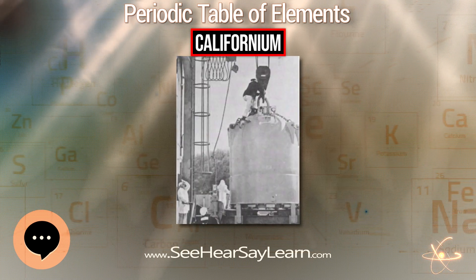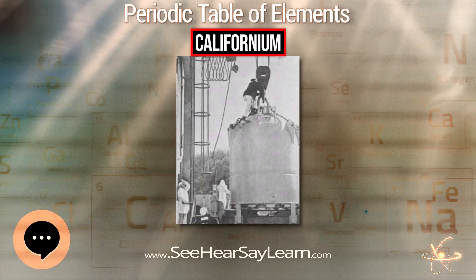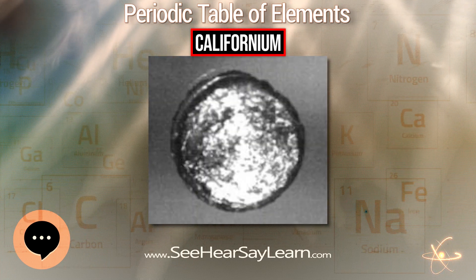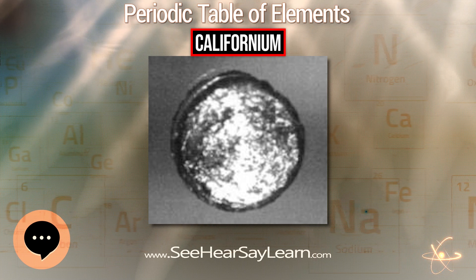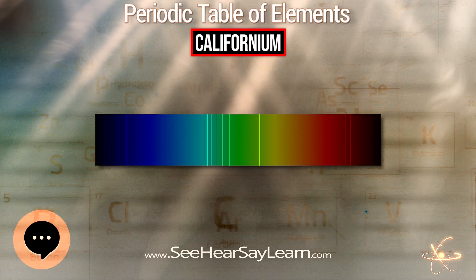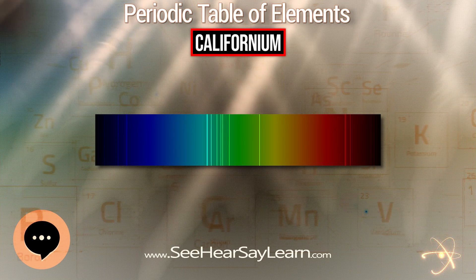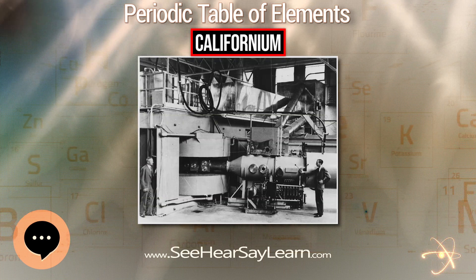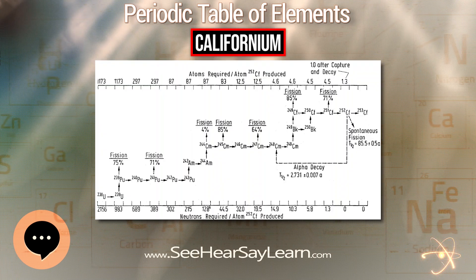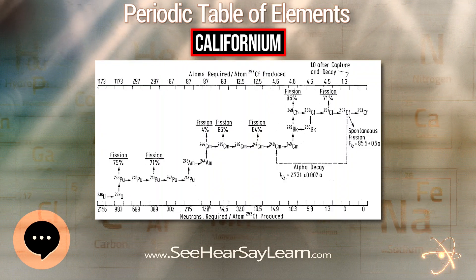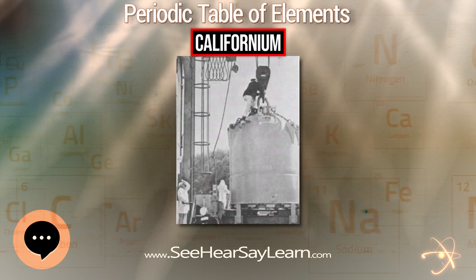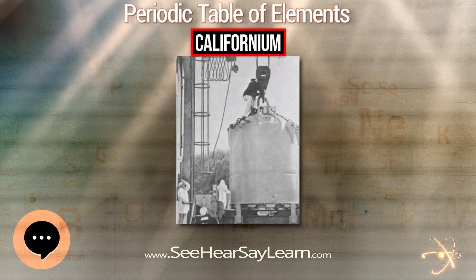Californium is the heaviest actinide to exhibit covalent properties, as observed in californium borate. Twenty radioisotopes of californium have been characterized, the most stable being californium-251 with a half-life of 898 years, californium-249 with a half-life of 351 years, californium-250 with a half-life of 13.08 years, and californium-252 with a half-life of 2.645 years. All remaining isotopes have half-lives shorter than a year.